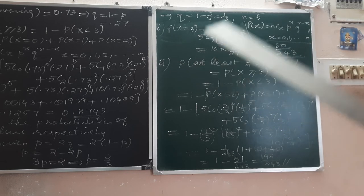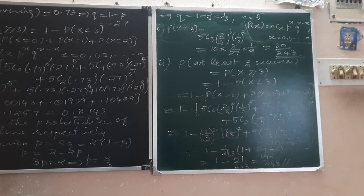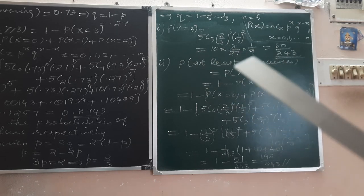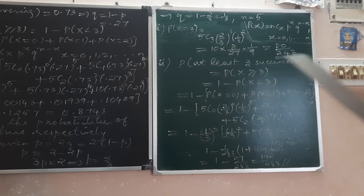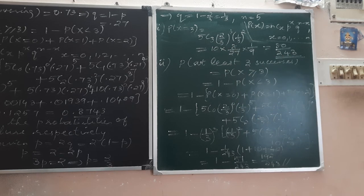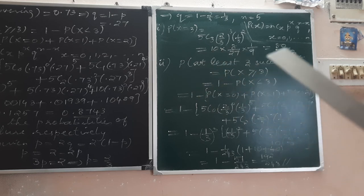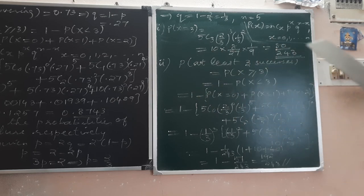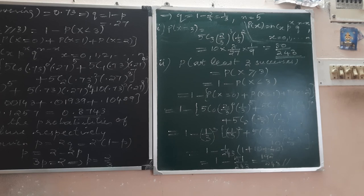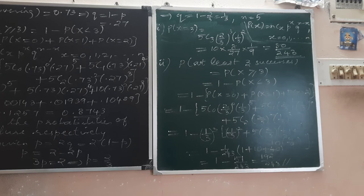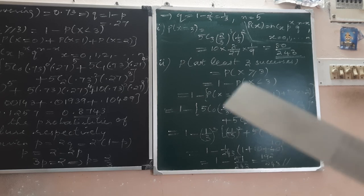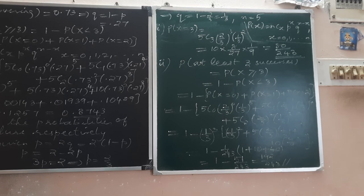That is 5C3, 2 by 3 power 3, 1 by 3 power 5-3, that is 2. 5C3 is 5C2, that is 10, into 2 by 3 which is 8 by 27, times 1 by 3 squared which is 1 by 9. This simplifies to 80 divided by 243.